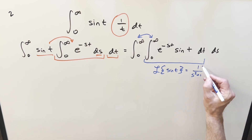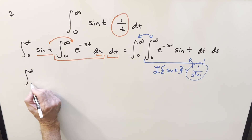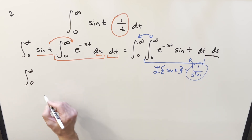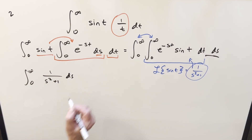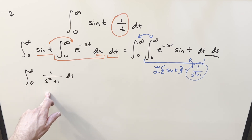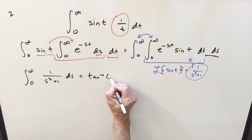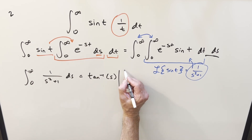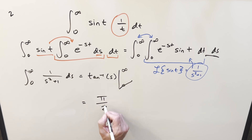This simplifies quickly because we just plug 1/(s² + 1) back in for that inner integral. We're back to a single integral from 0 to infinity of 1 over s² + 1, ds. This is exactly the arctan formula. The integral of 1/(s² + 1) is arctan of s, evaluated from 0 to infinity. Arctan at 0 is 0, and arctan at infinity is π/2. So our final answer is π/2.